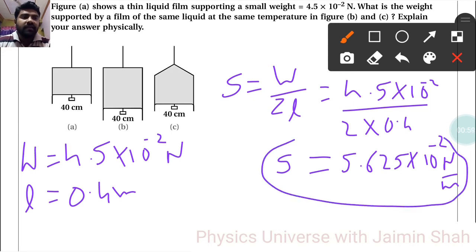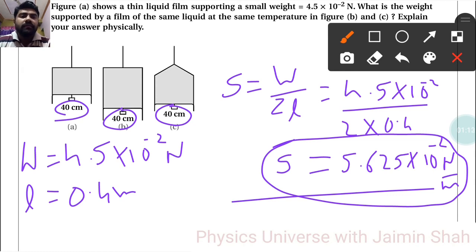The surface tension value is constant. For all figures, the length is 40 centimeters, so the surface tension is constant. And the weight in all these figures is fixed at 4.5 × 10^-2 Newton.